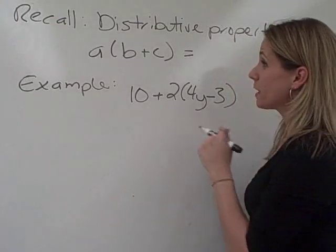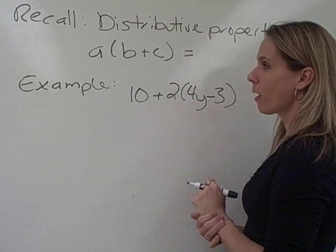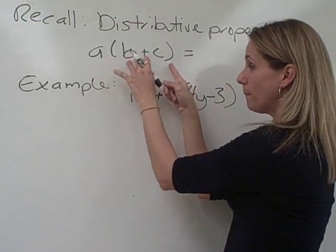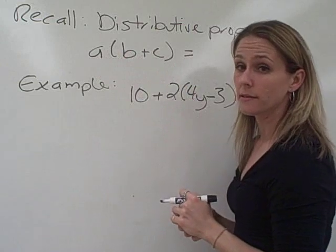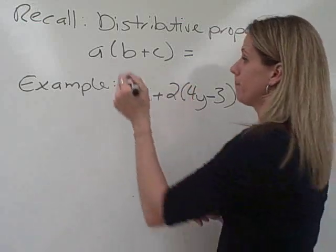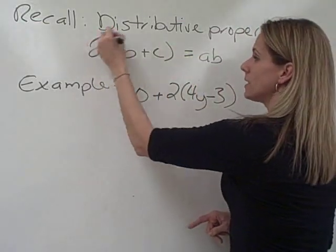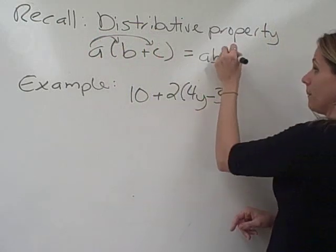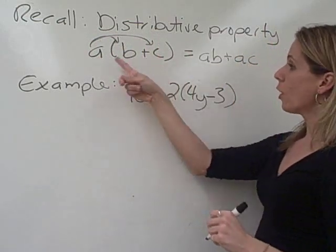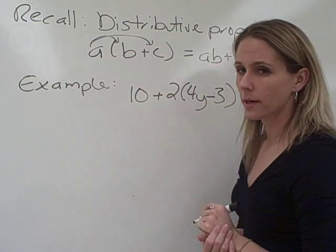This next example is going to use our distributive property. So let's remember that. Our distributive property says if I take a and multiply it by b plus c, which is in parentheses, then I have to take a and multiply it by both b and c. So we take a times b, then we take a times c. And we don't forget that we keep the same sign in the middle. So a times b plus c is ab plus ac. And that's going to come in handy.